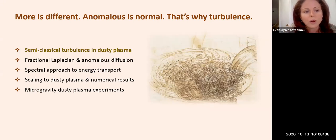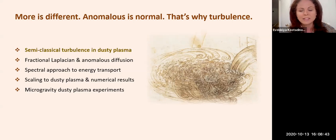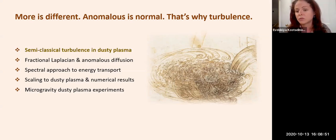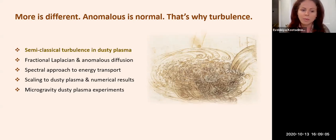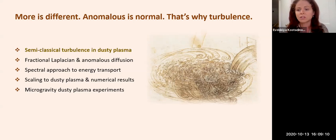The outline will go as follows: first, we'll talk about what we mean by semi-classical turbulence — a formulation useful for dusty plasma. Then we'll discuss how we model anomalous diffusion with the fractional Laplacian operator, followed by the essence of spectral methods for energy transport. Finally, we'll talk about how this whole numerical and theoretical approach scales to dusty plasma, what the results mean, and how we compare them to results from the space station.